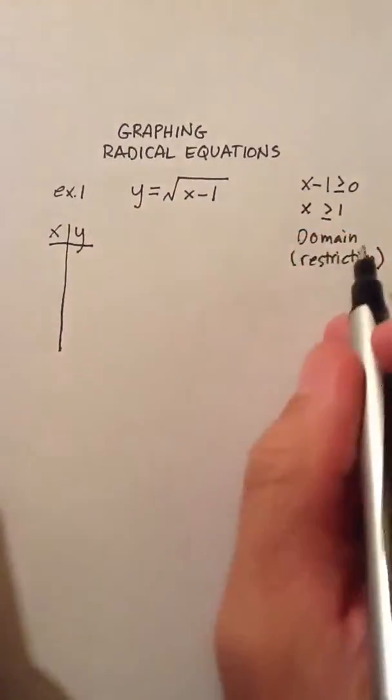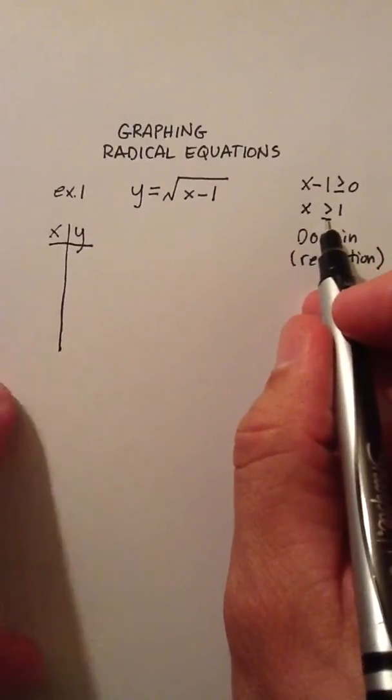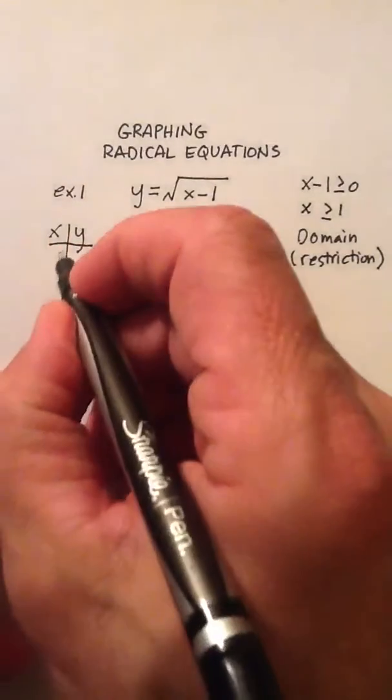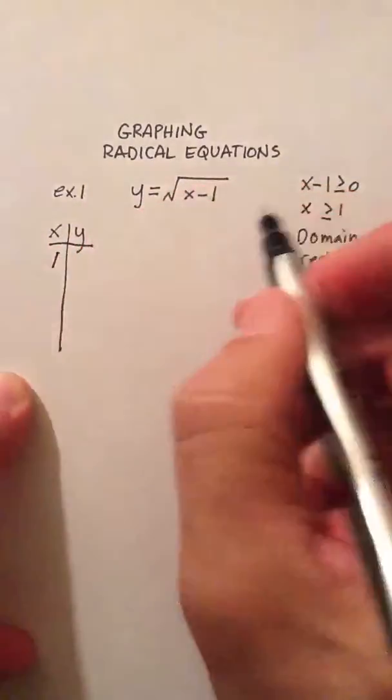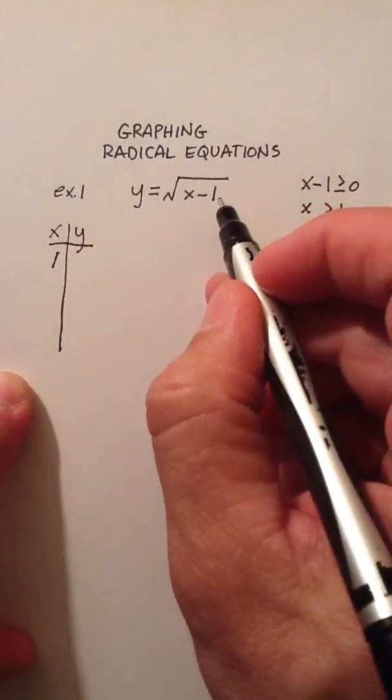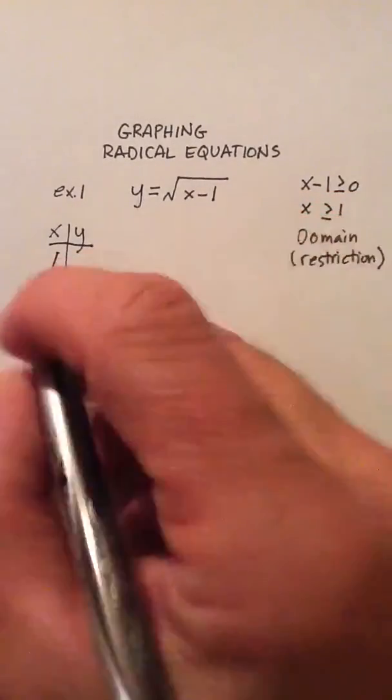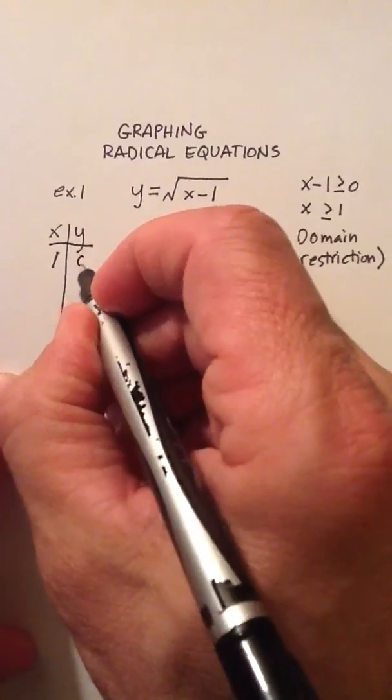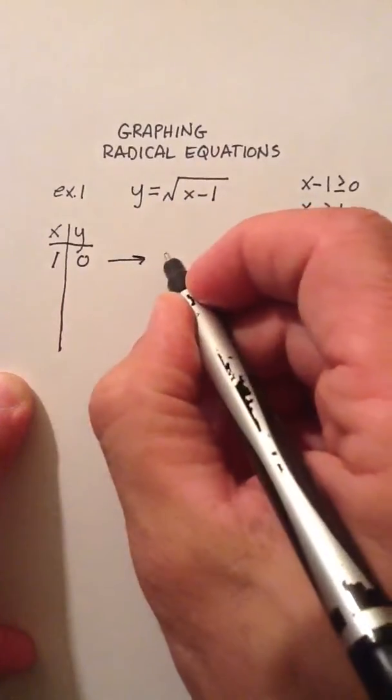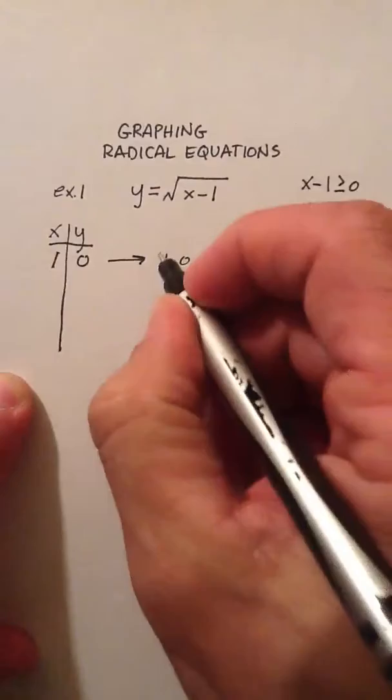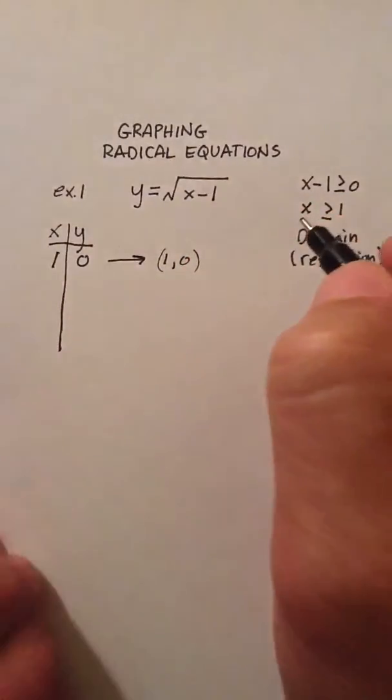Now, since I know now which x's I can choose, let's start choosing. I'm going to choose the lowest one possible, and that would be 1. So, if I put 1 up here, I would say 1 minus 1 gives me the square root of 0. So, the square root of 0 is 0, so my point is 1, 0. And that produces 1, 0. And there's my first coordinate or point.